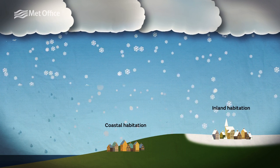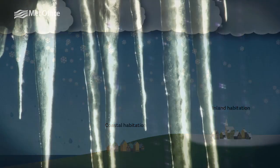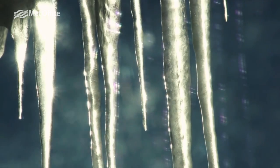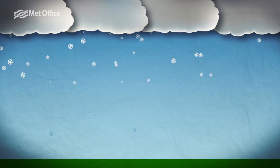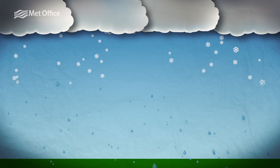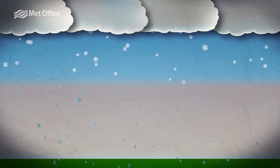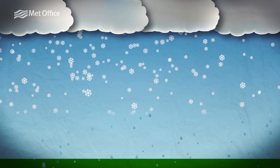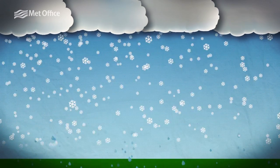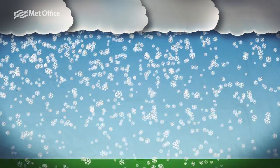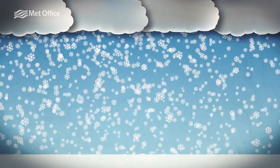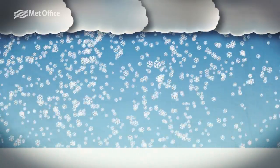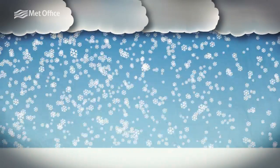Another key factor that affects the type of precipitation we get at the surface is the intensity of the precipitation itself. When snowfall is heavy it starts to melt as it falls below the freezing level. This melting process uses up energy from the atmosphere, which has the effect of cooling the surrounding air. Because the air has now been cooled, the freezing level is now lower, which means that the snow can fall closer to the ground before starting to melt, allowing more snow to reach the surface. This process happens to an extent regardless of the intensity of the snow, however unless the snowfall is heavy the effects are minimal.